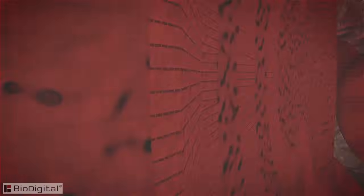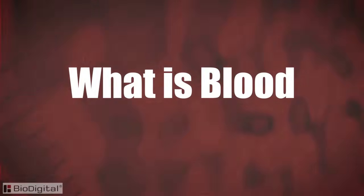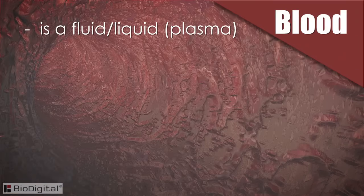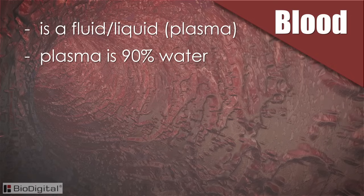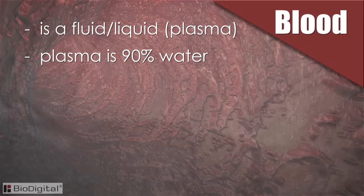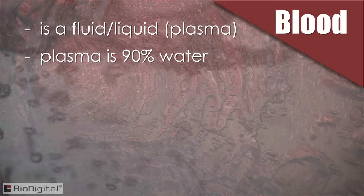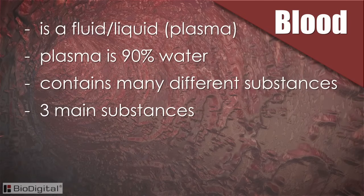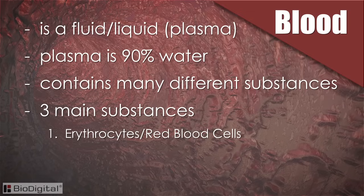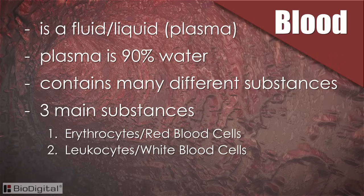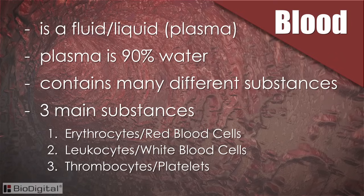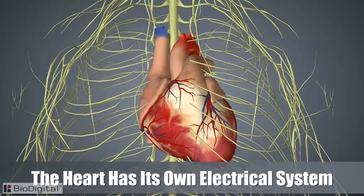Blood is a fluid known as plasma. Plasma is made up of ninety percent water, which is why drinking a sufficient amount of healthy water is absolutely necessary. Blood contains many substances, but the three main types of blood cells are: erythrocytes, known as red blood cells; leukocytes, known as white blood cells; and thrombocytes, which are the platelets.